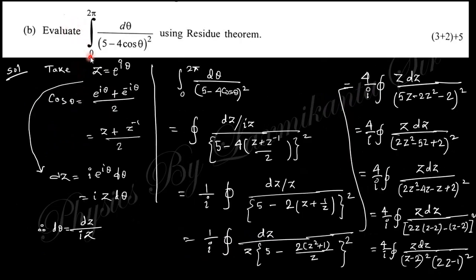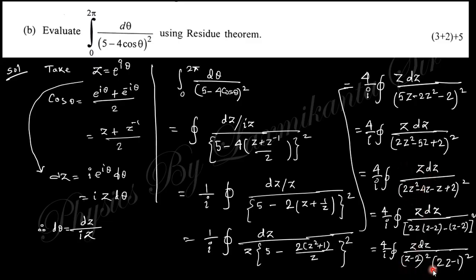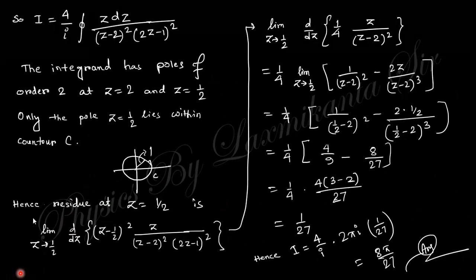Next question: evaluate the integral ∫₀²π dθ / (5 − 4cosθ)² by the residue theorem. Taking z = e^(iθ), cos θ = (z + z⁻¹)/2, and dθ = dz/(iz). Substituting θ in terms of z and simplifying, you finally obtain the integral in contour form.